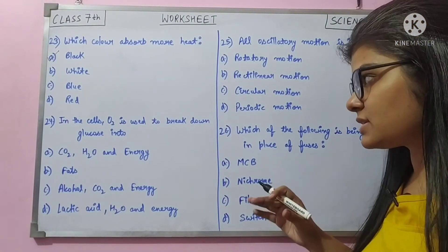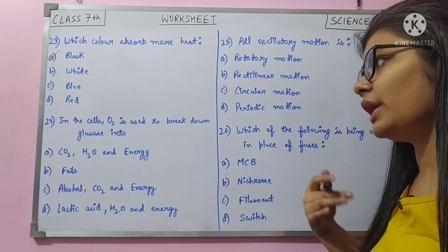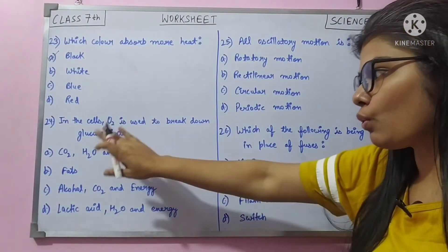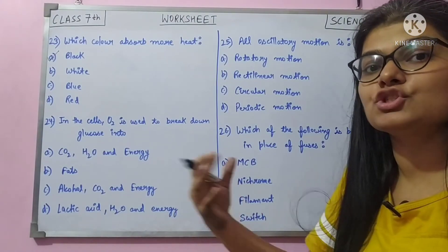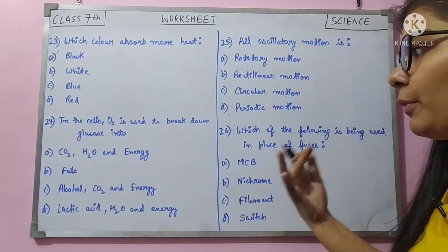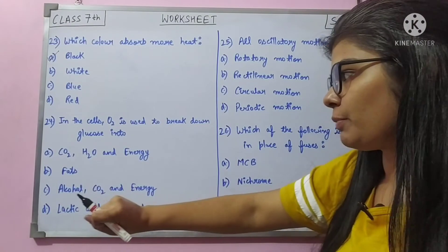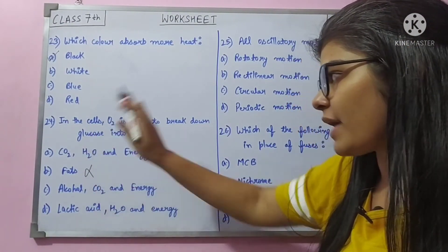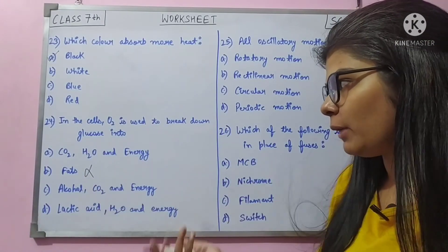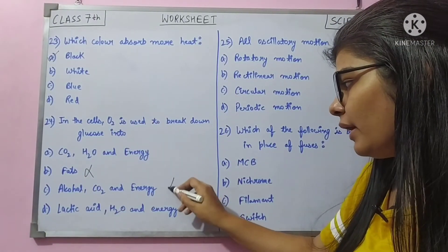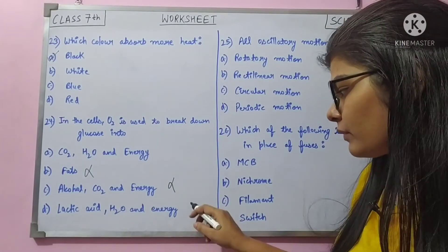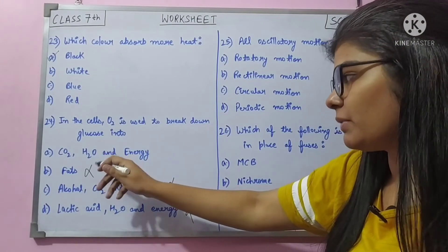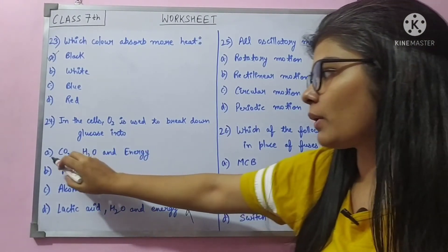Question 24: in the cells, oxygen is used to break down glucose into — glucose needs to be further broken down to get energy. Carbon dioxide, water, and energy are produced. Fats may form slightly, but alcohol is not produced because oxygen is present. Lactic acid is also not produced here. Products are carbon dioxide, water, and energy. Answer is A.